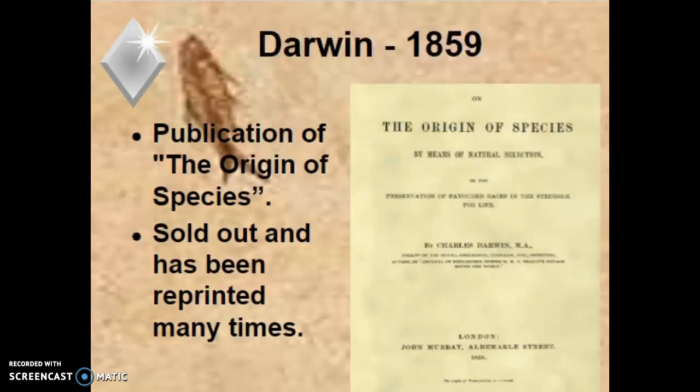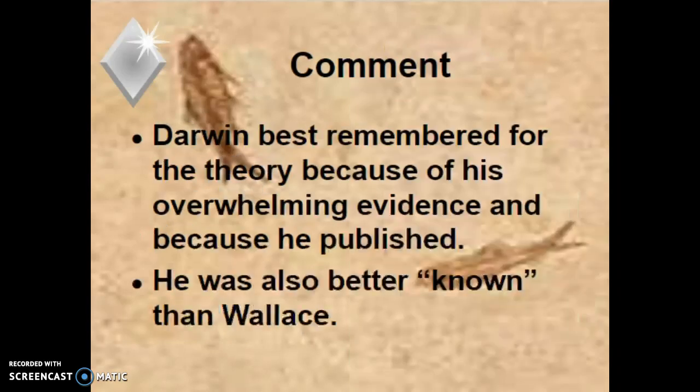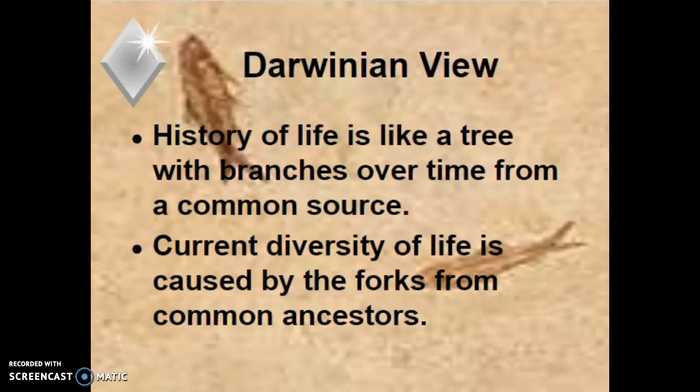Darwin gets the credit because he did publish On the Origin of Species the following year. It sold out and has been reprinted many, many times. It's important to note that Darwin never said the word 'evolution.' He said 'the origin of species by means of natural selection.' He's best remembered because of the overwhelming evidence, and also because he was better known than Wallace — more people had heard his name before his publication.